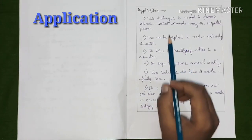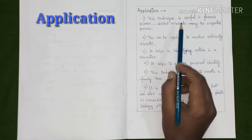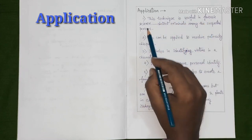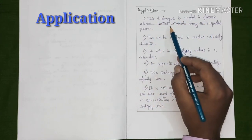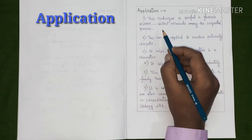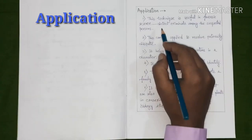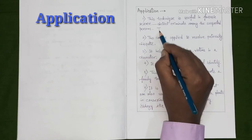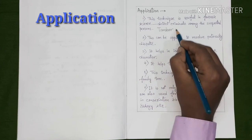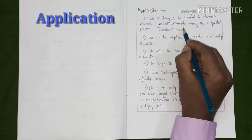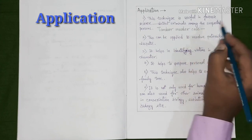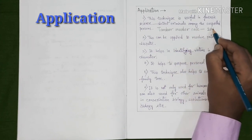Next we will discuss about the application of the procedure. Here's the application of DNA fingerprinting. First, this technique is useful in forensic science to detect criminals among the suspected persons. This technique became famous by resolving the great infamous Tandoor murder case in 2003.